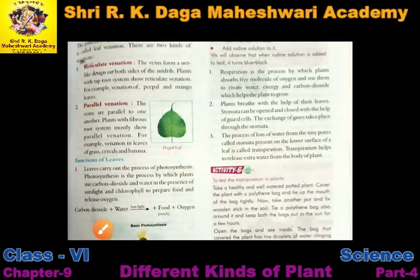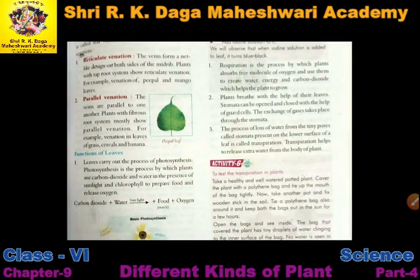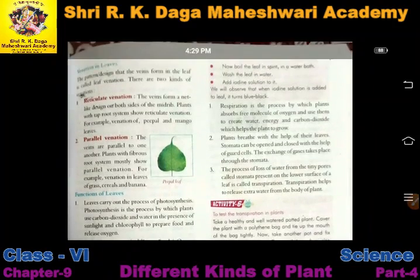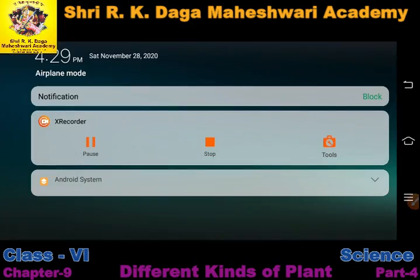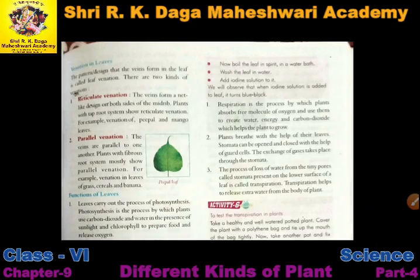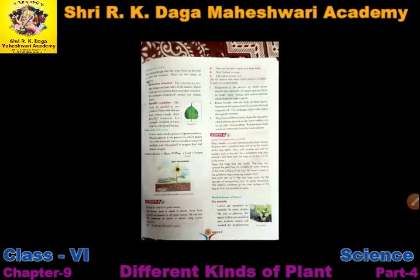Good morning students. In our last class, the last topic that we discussed was the function of leaves — we discussed the process of photosynthesis. The leaves manufacture food by the process of photosynthesis in the presence of sunlight. This thing we have already discussed.